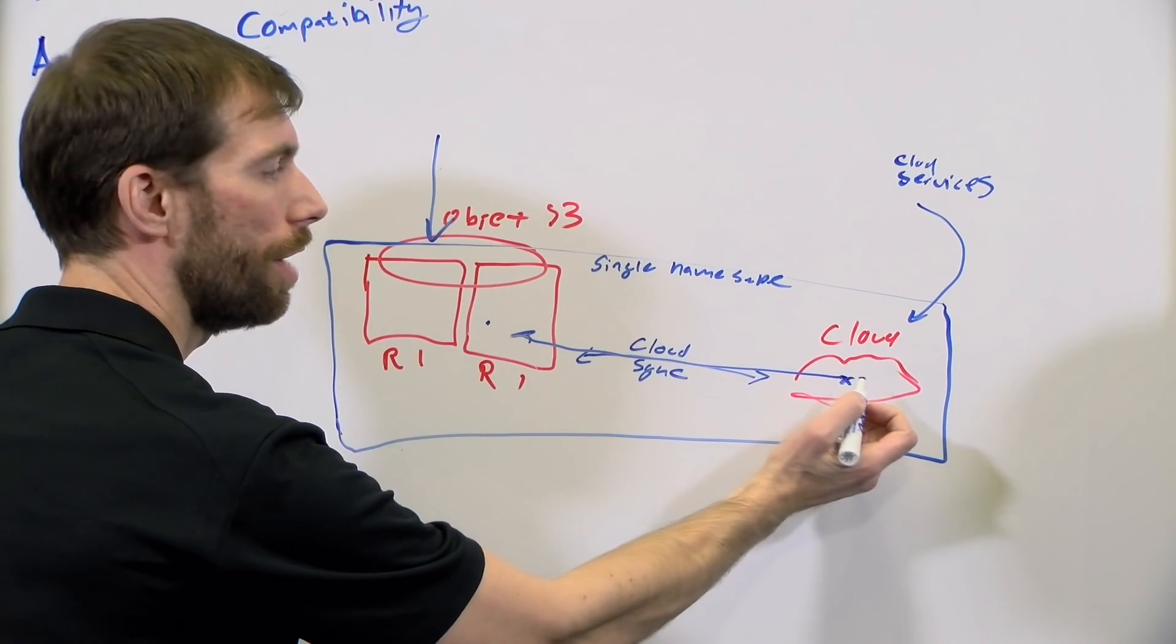And then when the data is in here, we can take all the other cloud services and they can see the data. Because what we've done is we've stored it in the native format in the public cloud. So if I want to use a service that, say, Amazon provides, it's already ready to go, I just point at it. That's right. Awesome.